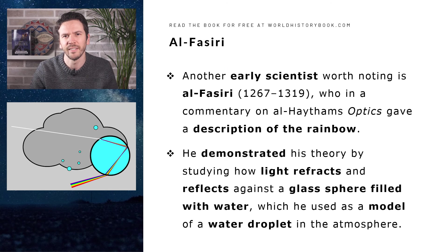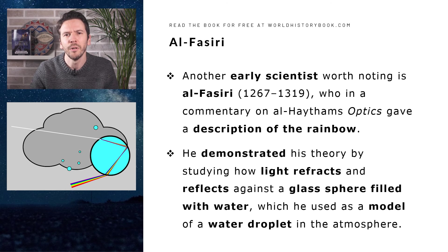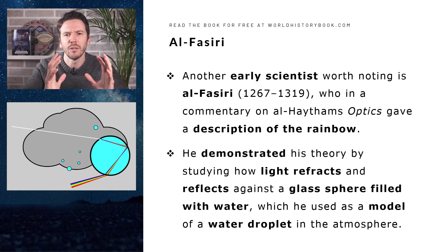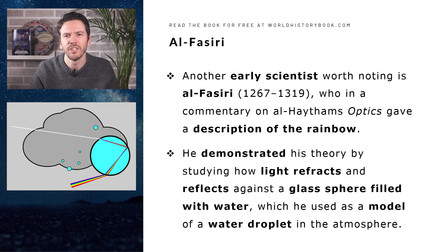Another early scientist worth noting from the Arabic world was Al-Fasiri, who wrote a commentary on al-Haytham's optics in which he gave a description of the rainbow. He demonstrated his theory by studying how light propagates in a glass sphere filled with water, which he used as a model of a water droplet in the atmosphere. This is perhaps the first use of a model to understand a scientific phenomenon, which also became one of the hallmarks of science.